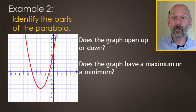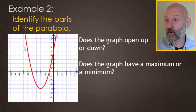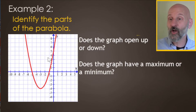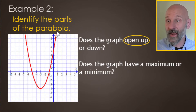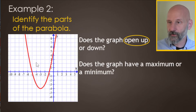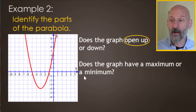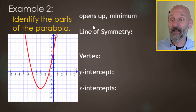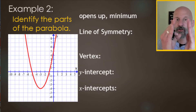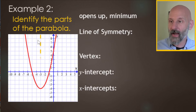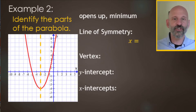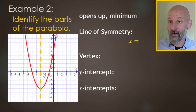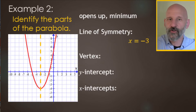Now let's look at parts of a parabola. This parabola opens up like a U, so it has a minimum — a bottom but no top; it keeps going up forever. The axis of symmetry is where you can fold the page in half to match both sides, and it passes through x equals negative three. Written as an equation: x = -3.